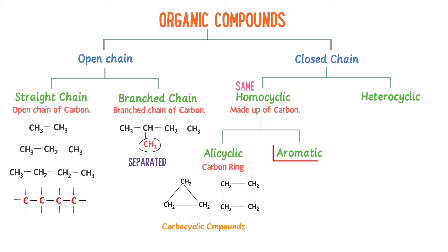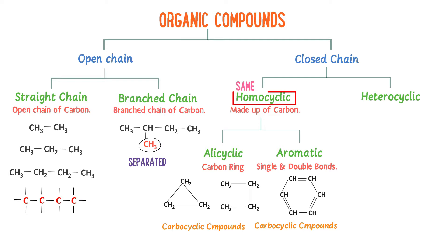Aromatic compounds are those organic compounds which contain alternate single and double bonds between the carbon atoms. For example, benzene. In this organic compound, carbon atoms are joined together by alternate single and double bonds, and it also contains only a carbon ring, so it is also known as a carbocyclic organic compound. Thus, homocyclic organic compounds are divided into alicyclic and aromatic organic compounds.